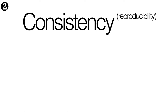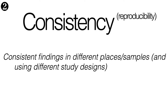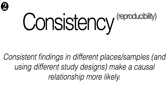Criterion two is consistency, or reproducibility. Consistent findings observed in different places, different samples, and using different study designs make a causal relationship more likely. If the same association is observed repeatedly, we're intuitively inclined to assume a causal link. But we need to first check that other likely explanations can reasonably be rejected. For example, is it always the same group of researchers or the same cohort showing the association? Might the association be the result of some flaw in how the research is done, data is collected or analysed, and therefore might it not exist at all?